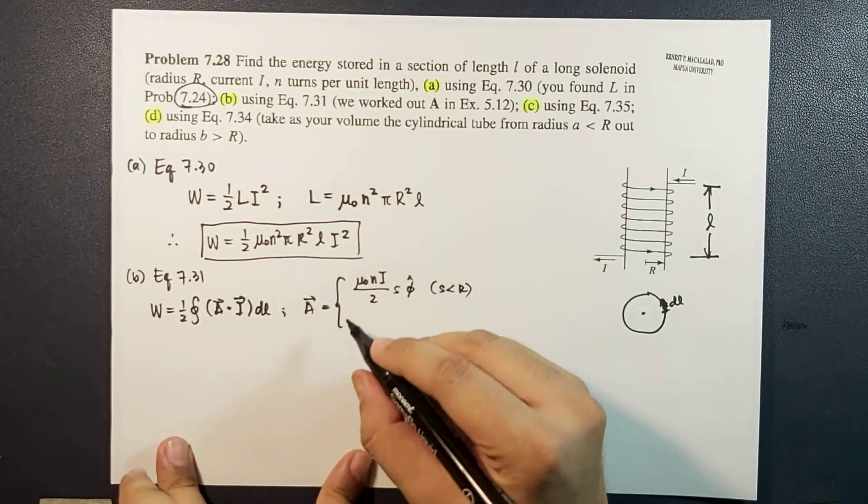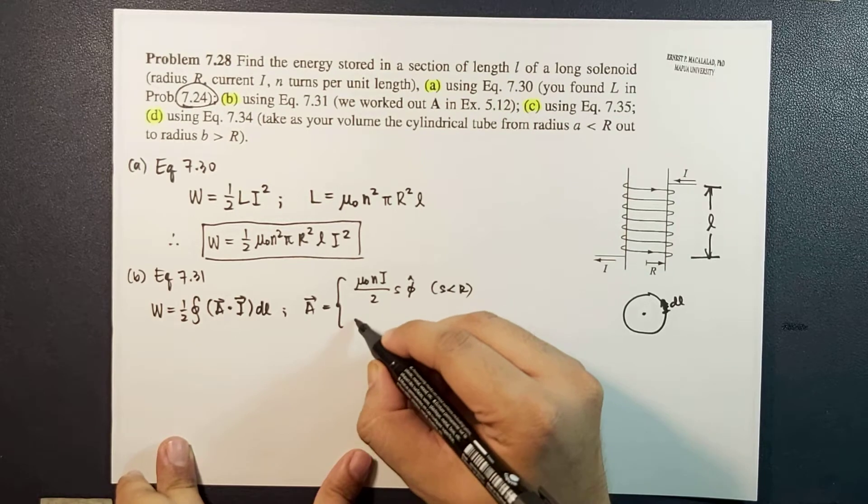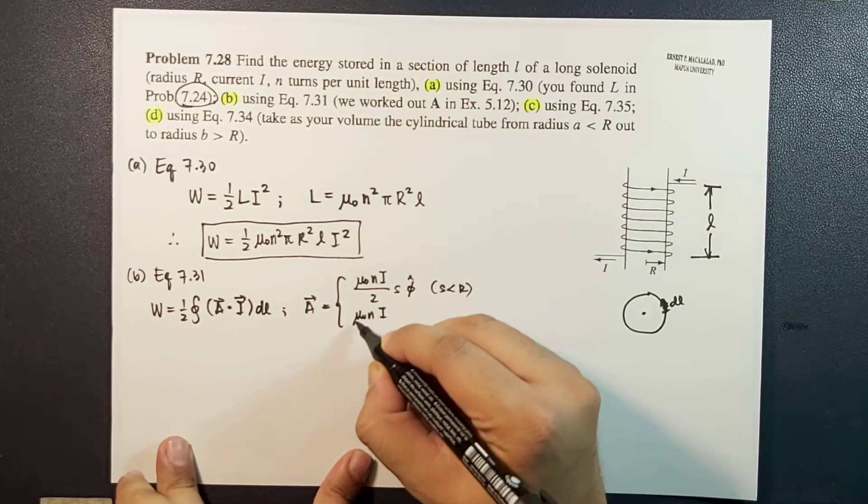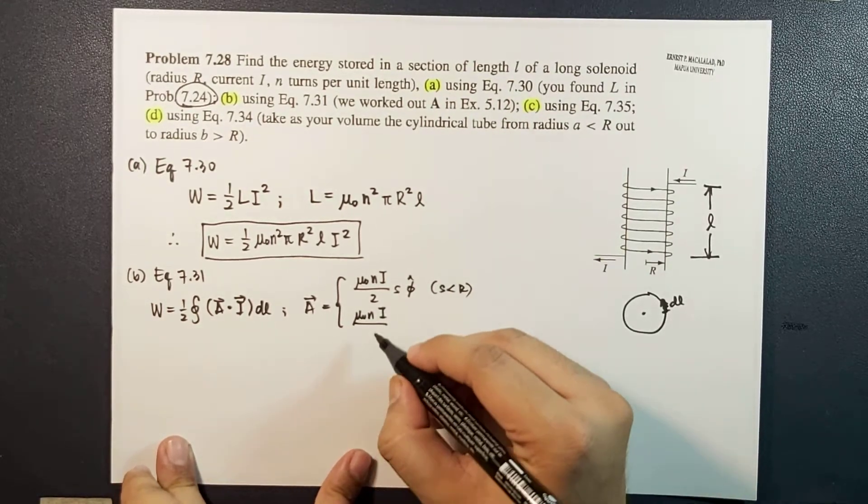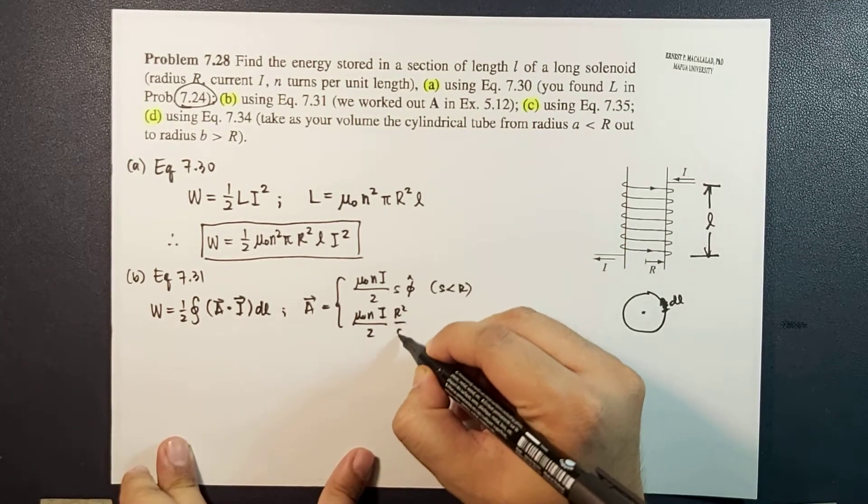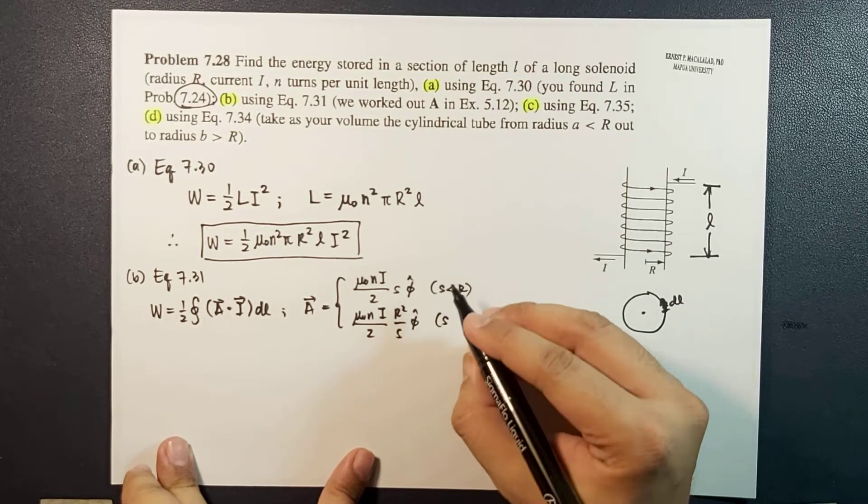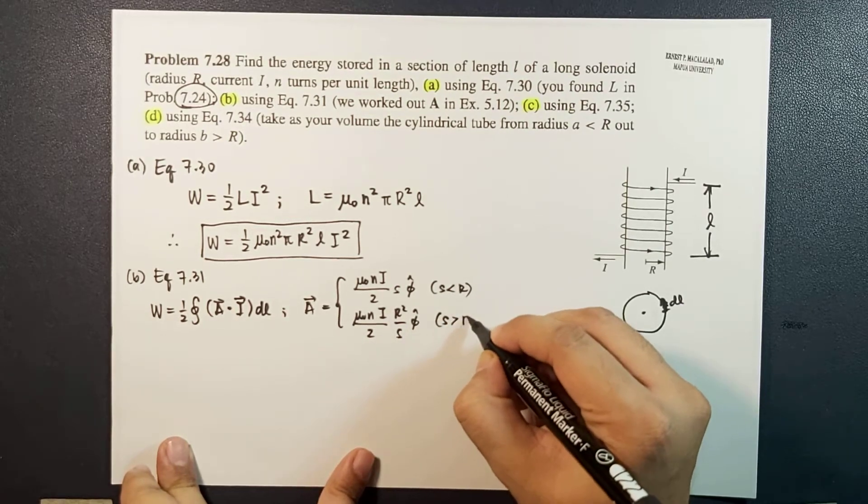For outside, the magnetic vector potential is μ₀ni over 2 times r² over s φ̂. This is for s greater than r.